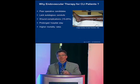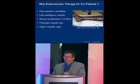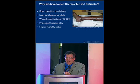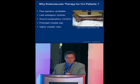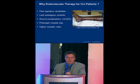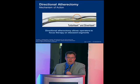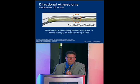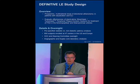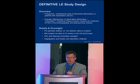Why endovascular therapy for critical limb? Historically, it's been surgical, but endovascular therapy has come to the forefront of treating the CLI patient across all disciplines — vascular surgery, cardiology, interventional radiology, and even interventional nephrologists. Most of these patients are poor operative candidates because of their comorbidities. There is poor conduit in many cases, wound complications of 15-25% for surgical wounds, very lengthy hospital stays, and certainly higher mortality rates. Directional atherectomy is one of the first approaches that really came out for treating below-the-knee disease, using TurboHawk and SilverHawk, which are directional and can target eccentric lesions.